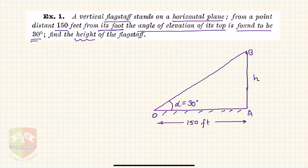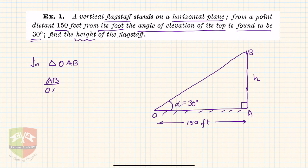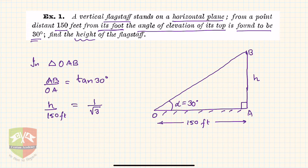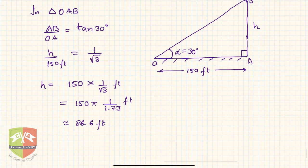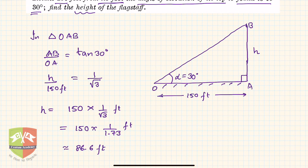The angle at A is 90 degrees, so in triangle OAB: AB/OA = tan 30°. AB is h and OA is 150 feet. From trigonometric ratio tables, tan 30° = 1/√3. Therefore h = 150 × (1/√3) = 150/1.73 ≈ 86.6 feet. This is how a trigonometric height and distance problem is solved.